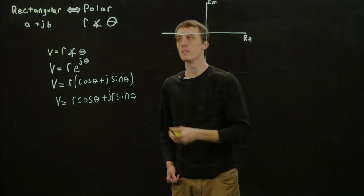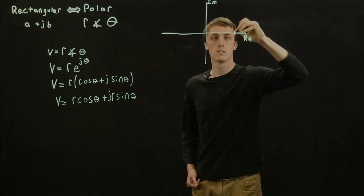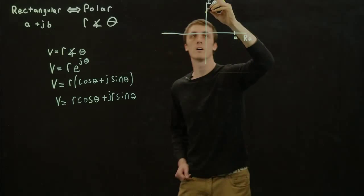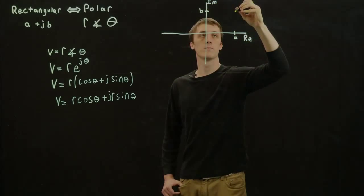So in a general case where we have A, we can write this as a point A on the real and a point B on the imaginary. When we plot this point right here,